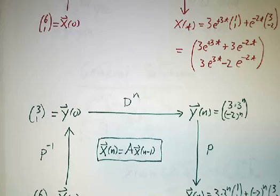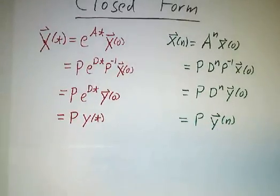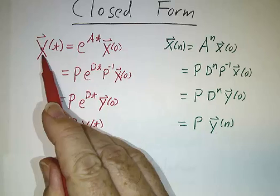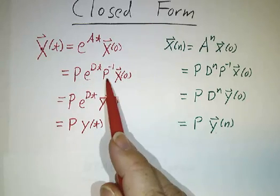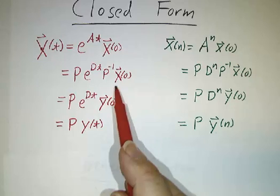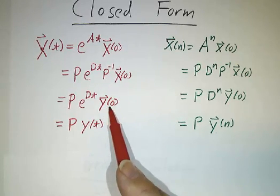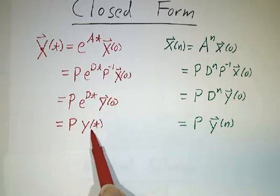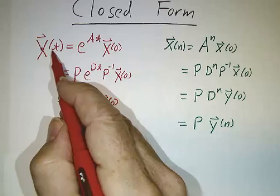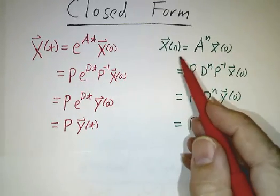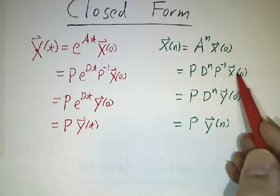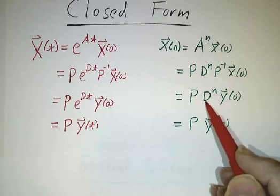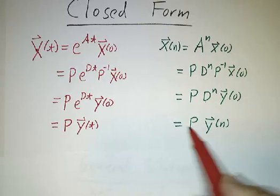There's the differential solution; there's the difference equation solution. If you want to write these solutions in closed form, they look very much the same. For the differential equation, the solution is e^(At) times the initial value. You get e^(At) as P * e^(Dt) * P-inverse times the initial value: P-inverse times the initial value of x is the initial value of y, e^(Dt) times that is the final value of y, and P times that is the final value of x. For the difference equation, we had A^n instead of e^(At), computed as P * D^n * P-inverse, with the same P-inverse, the same y(0), D^n instead of e^(Dt), and then multiply by P to come home.